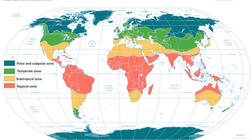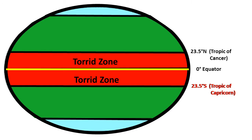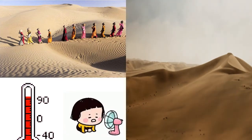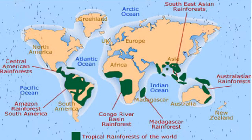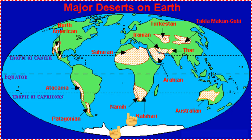Now let us learn about the position and the climate of these heat zones. Let us begin with the torrid zone. The torrid zone, also known as the tropical zone, lies between the equator and the tropics — between the equator and the Tropic of Cancer in the northern hemisphere, and the equator and the Tropic of Capricorn in the southern hemisphere. It extends from 0 degrees to 23.5 degrees in each hemisphere. The temperature in this region is quite high, that is why it is called the torrid zone — torrid means intensely hot. This region is not only very hot but also receives very heavy rainfall. All the major deserts are present in this zone.